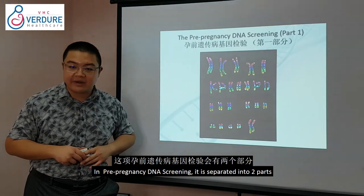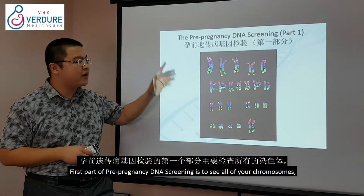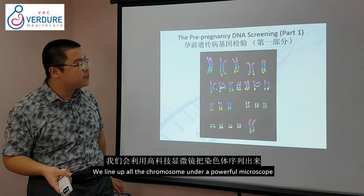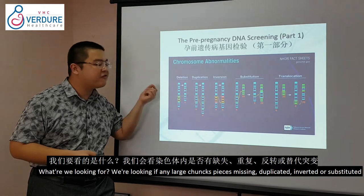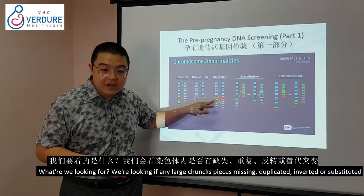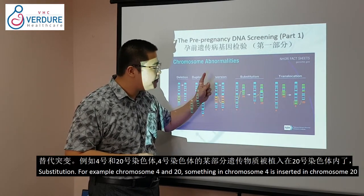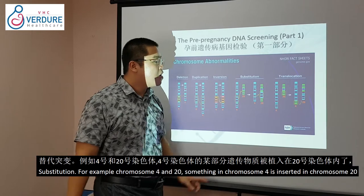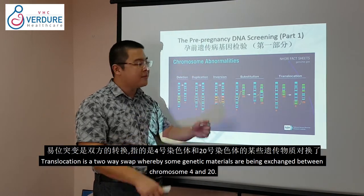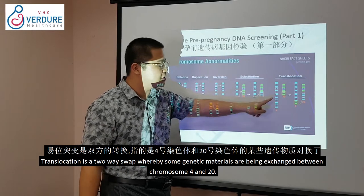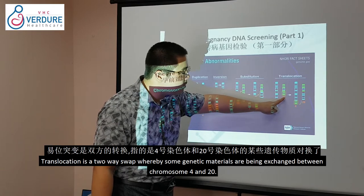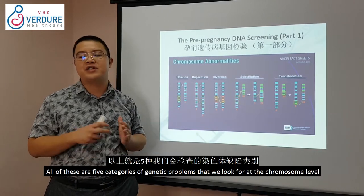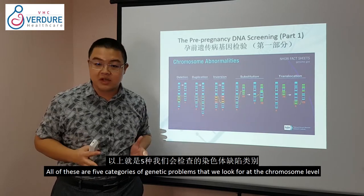Our pre-pregnancy DNA screening has two parts. The first part screens your chromosomes by lining up all 23 pairs under a powerful microscope, looking for large chunks that are missing, duplicated, inverted, or substituted. A substitution means something from, say, chromosome 4 has moved to chromosome 20, while a translocation is a two-way swap. These five categories of chromosomal problems are what we examine.